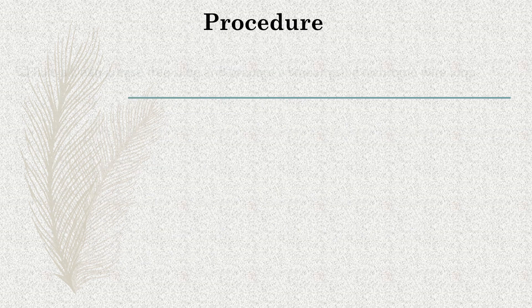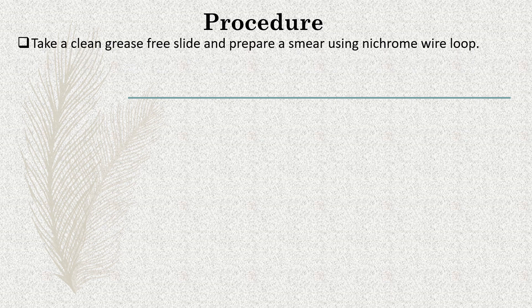Let's see the procedure of staining. Take a clean grease-free slide and prepare a smear using a nichrome wire loop. Nichrome is a metal that heats up fast and cools down fast, which is why wire loops are made of nichrome metal. After preparing the smear, you have to air dry and heat fix the slide. To heat fix, pass the smear rapidly 2–3 times through a Bunsen burner flame and your smear will get heat fixed.